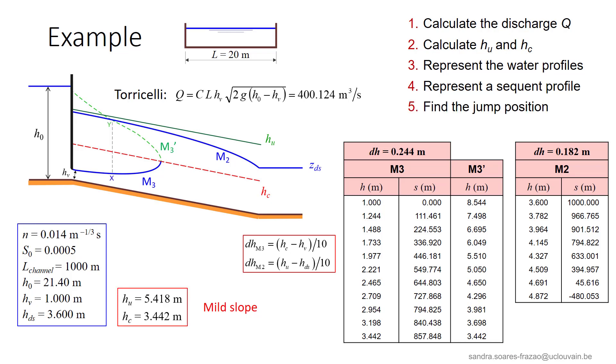Finally, we find the position of the hydraulic jump as the intersection between the M3 prime and the M2 profile, so point y illustrated here.